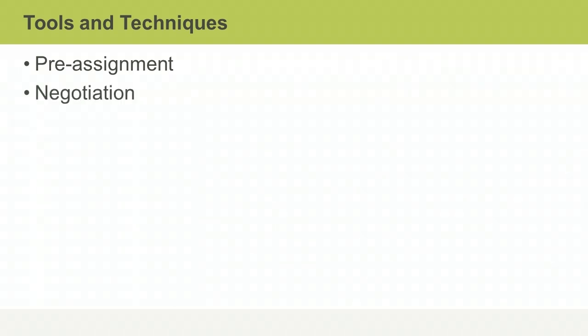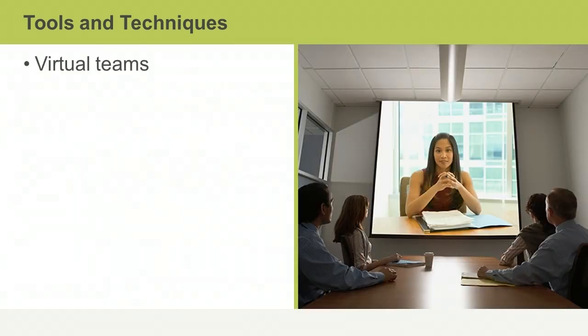You may need to persuade internal functional managers or managers of other projects to release people for your project team. You may also need to persuade external organizations to provide resources on a contractual basis. These negotiations hinge on the availability and skills of the resources. If the project team members you need aren't available from the pool of existing employees in your organization, or aren't all available at a particular location, you can set up virtual teams or use acquisition to contract staff from third-party organizations.